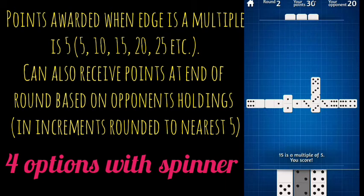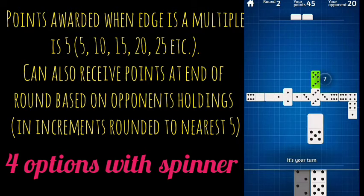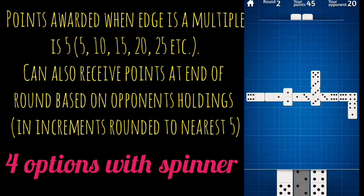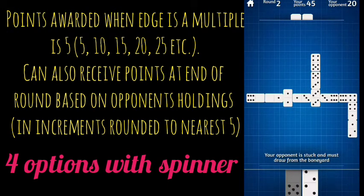So you always want to be on the lookout for big scoring opportunities. Here we have just pretty much two choices: there's a seven which won't help us because that's not a multiple of five, and there's an eleven. We're gonna go for the eleven just to have the edge higher, so if we do score we get more points.